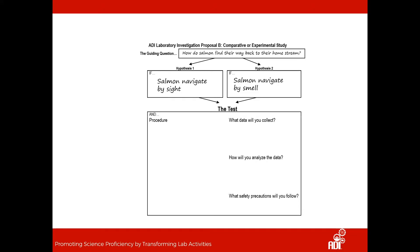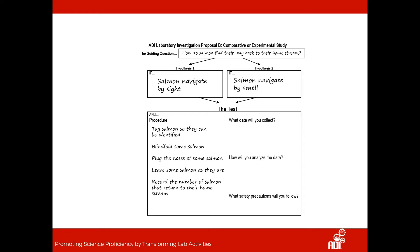Now that we've come up with our hypotheses, we need to develop a test. We can tag salmon to identify them, blindfold some salmon to take away their ability to navigate by sight, plug the noses of other salmon to take away their ability to navigate by smell, and leave some alone as a control. We'll look at the number of salmon that returned to their home stream. We'll collect that data and graph the numbers to compare which group had the fewest returns. Then we think about: what will my data look like if either of these hypotheses are supported?